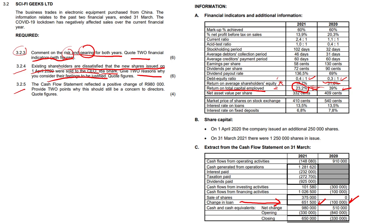When the CEO buys shares in the company, everybody's going to ask: how come we didn't get to know about this? Looking at the question paper, item B — share capital: on 1st April 2020 the company issued an additional 250,000 shares, and all of this went to Mrs. Shark. So how did this affect the business? Let's look at some key ratios.